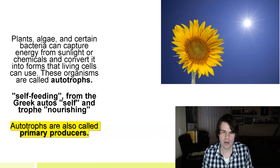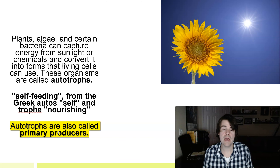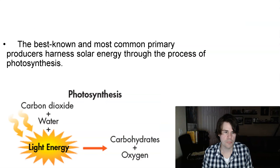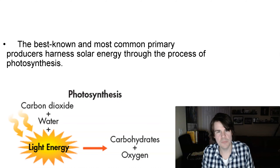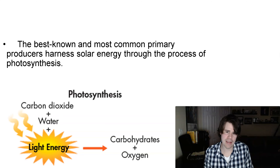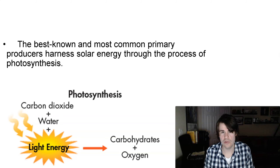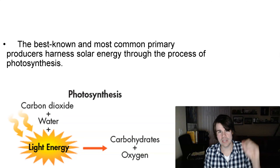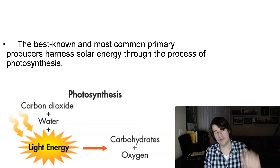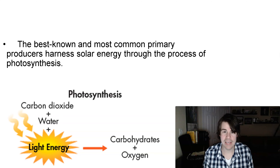Autotrophs means 'self-nourishing' in Greek. They make their own food through the process of photosynthesis. The equation is: carbon dioxide plus water plus light energy yields complex carbohydrates and oxygen — usually glucose in examples. If you take CO₂ (one carbon) and want to make glucose (C₆H₁₂O₆, six carbons), you have to input energy to build that more complex molecule.